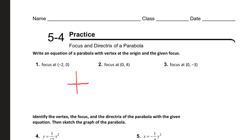You notice that the focus is at negative two, zero. So that tells you that the parabola is going to be opening to the left, and the directrix is right here. So let's take a minute to think about what equation we're going to use. The equation you're going to use is x equals one over four c times y squared.